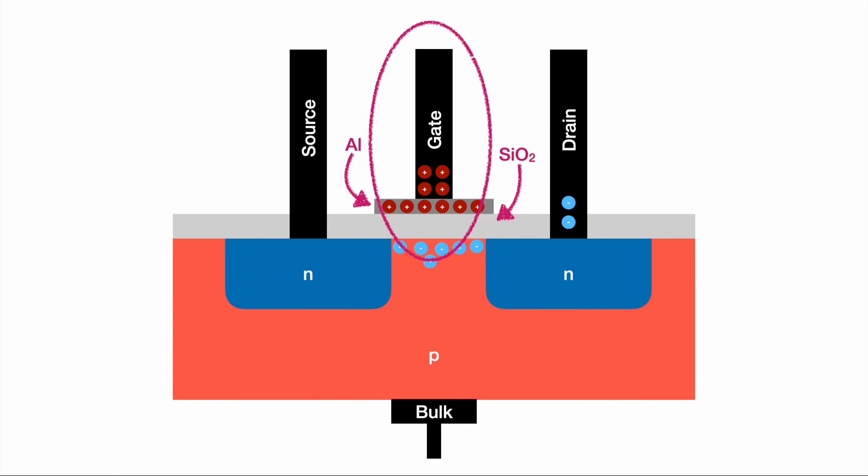To engage this switch, we have no electricity consumption. There's no base current flowing continuously to keep the MOSFET engaged, as we would have with the bipolar junction transistor.